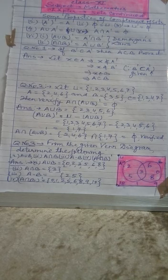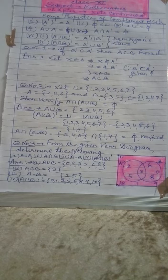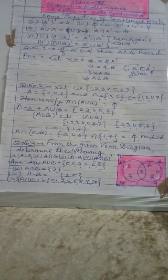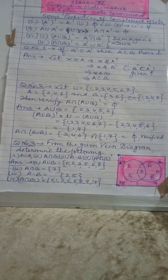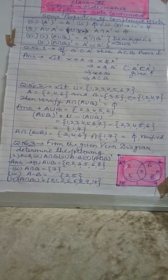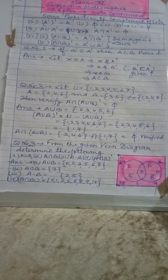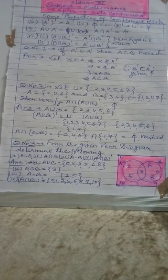So let X belongs to A implies X does not belong to A dash, that is complement, or X does not belong to B complement, because B complement is contained in A complement. So X will belong to definitely B, and it is therefore A is a proper subset of B, and that you have to prove.